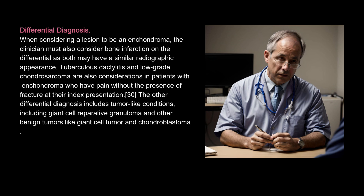Differential Diagnosis. When considering a lesion to be an enchondroma, the clinician must also consider bone infarction, as both may have a similar radiographic appearance. Tuberculous dactylitis and low-grade chondrosarcoma are also considerations in patients with enchondroma who have pain without the presence of fracture at their index presentation. Other differential diagnoses include tumor-like conditions such as giant cell reparative granuloma, and other benign tumors like giant cell tumor and chondroblastoma.